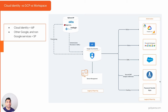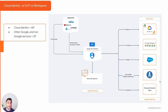On the other side you have services, and these can be Google services or third-party services. For this video let's talk about Google services. For example, if you want to use Google Cloud Platform, Google Ads, or Google Analytics — these are service providers because they are services. They need an authentication provider which they can rely on, and that is what Google Cloud Identity is.